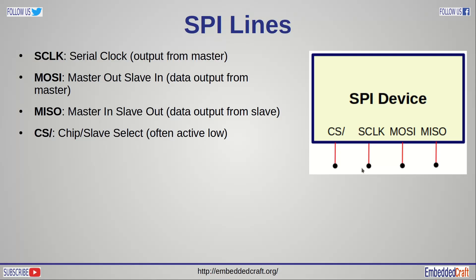Let us talk about SPI interface lines. There are 4 lines. First is SCLK, the clock line, which is generated by the SPI master and is an output line from the master. For data transfer there are 2 lines: one is MOSI — Master Out Slave Input — where data is sent from master to slave. The second data line is MISO — Master In Slave Out — meaning data is transferred from slave to master. And there is a chip select line; we need to enable it to select the SPI slave device, and it is generally active low.